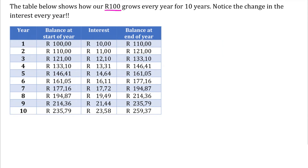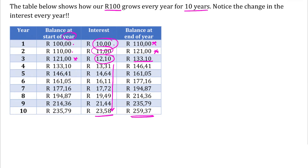Let's look at this table that shows how our R100 grows over 10 years. In year one we started with R100, earned 10% which is R10, and had a balance of R110. In year two we earned R11 of interest, giving R121. Year three: earned R12.10, balance R133.10. By year ten notice that you're earning R23 of interest — over twice the interest from year one — and the balance at the end of 10 years is R259.